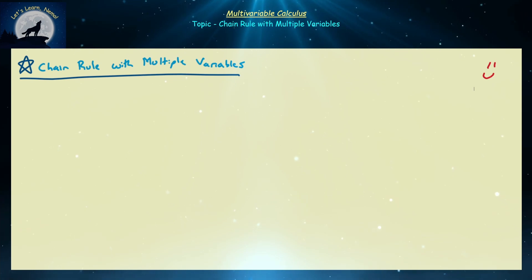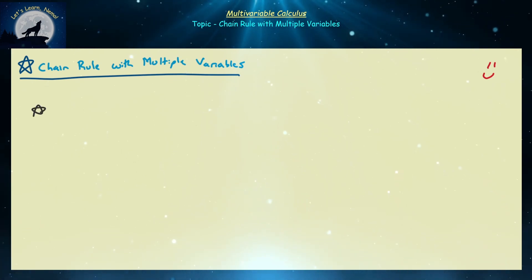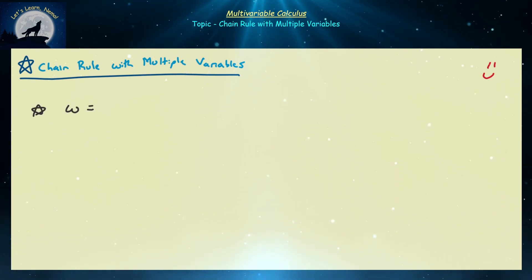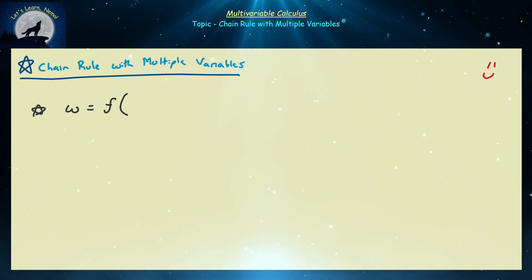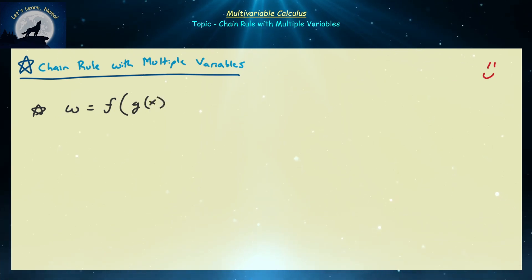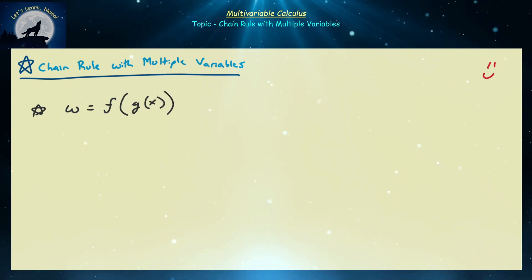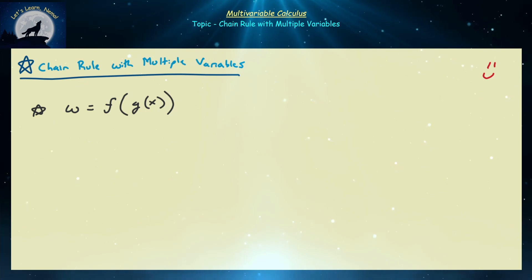What is the chain rule from single variable calculus? We first start off with a function, let's say w, and it can be represented as a function of other functions, say g, which is a function of some single variable x.